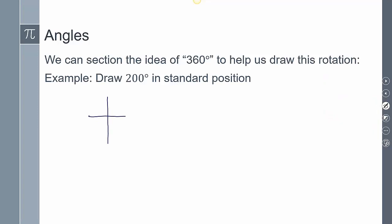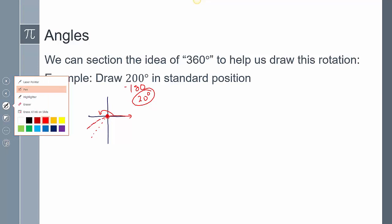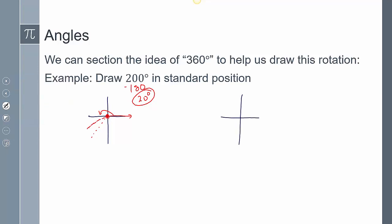Now drawing 200 degrees in standard position: the vertex is on the origin, initial side on the positive x-axis. 200 is bigger than 180, so subtracting 180 leaves 20 degrees. Since 45 is half of 90, and half of 45 is about 20 degrees, my terminal side lands just past the negative x-axis into the third quadrant — that's 200 degrees in standard position.